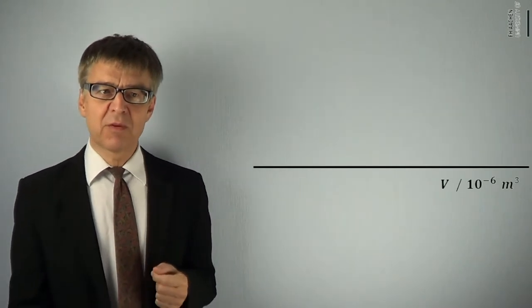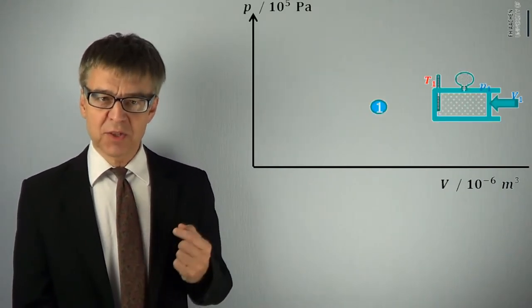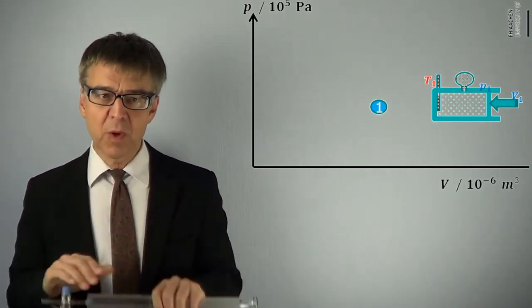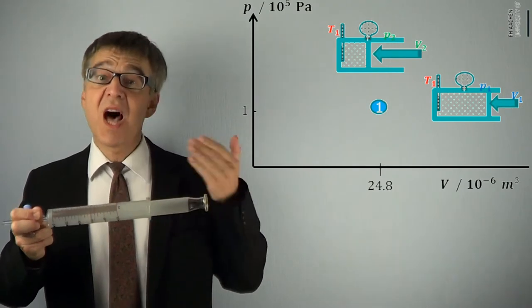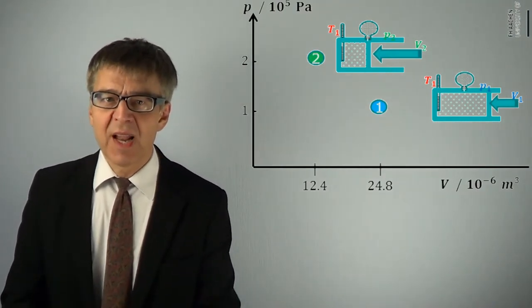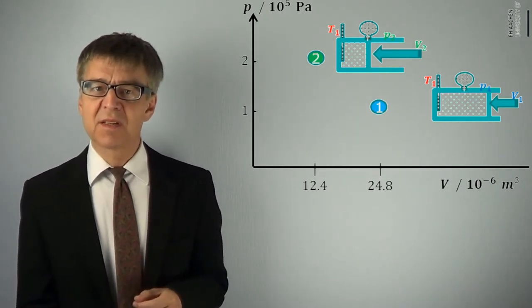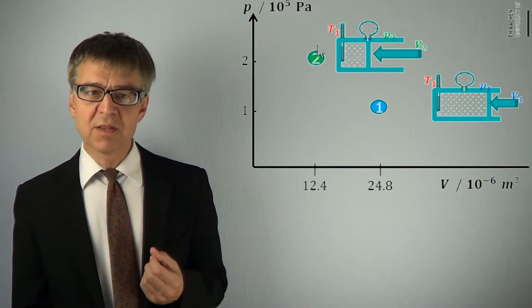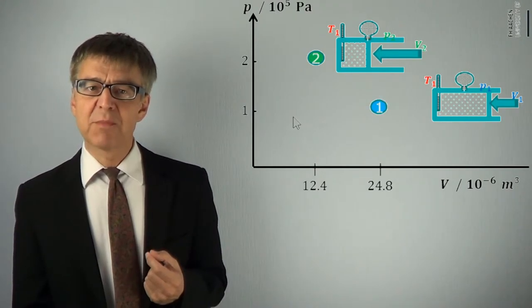If we represent Boyle's law graphically, the PV diagram shows the following figure. 1 is the initial state, large volume V1, small pressure P1. 2 is the final state, smaller volume, larger pressure. The two points lie on a hyperbola, mathematically described as P times V is constant. 12.4 liters times 2 bars is exactly the same as 24.8 liters times 1 bar.